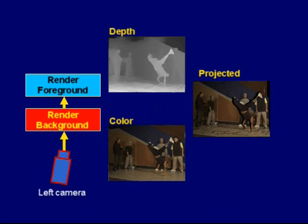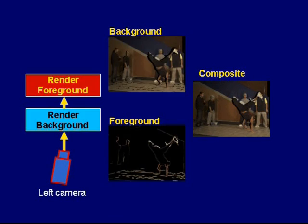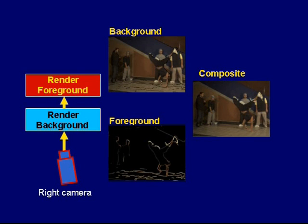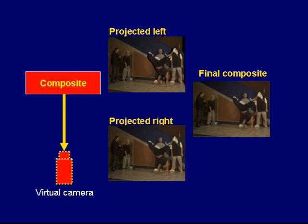At every frame, the background depth map is used to create a dense mesh that is texture mapped with the background color map. The mesh is projected into the virtual camera's view. The foreground data is converted to a mesh in a similar way to the background. The foreground regions are sparse and thus result in a smaller mesh. The foreground mesh is projected to the virtual view and alpha blended with the background result. The data from the other nearby camera is rendered in the same way, and the intermediate outputs from the two cameras are then composited by a pixel shader program to generate the final result. The composition process uses a soft depth compare that rejects occluded inputs while blending inputs that have similar depths.